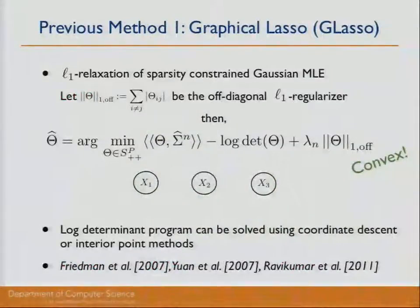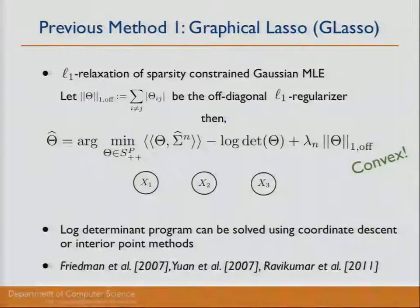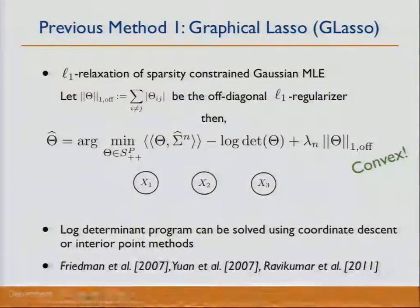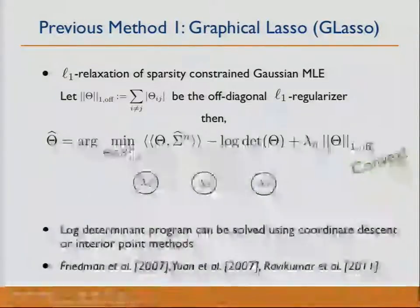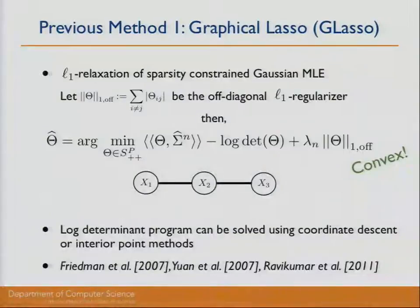Let's look at some previous methods. The first is the graphical lasso, or G lasso. G lasso circumvents the L0 non-convexity by imposing an L1 relaxation. Essentially, we're solving Gaussian MLE with L1 regularization on the off-diagonal elements. This is a convex problem — a log-determinant program — and can be solved using coordinate descent or interior point methods. It globally solves the full structure of the model.